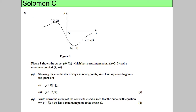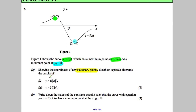In this question we're given a curve y equals f of x. It's got a maximum point at negative 3, 2 and a minimum point at 2, negative 4, showing the coordinates of any stationary points. So this time all we've got to show is the stationary points, and we sketch the following two functions, and then there's a part b.